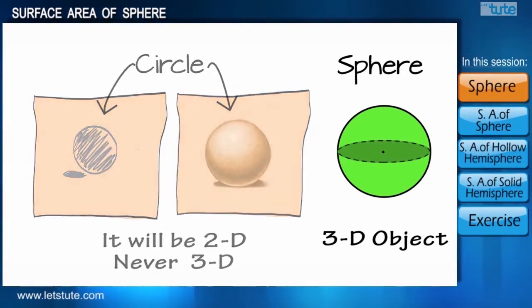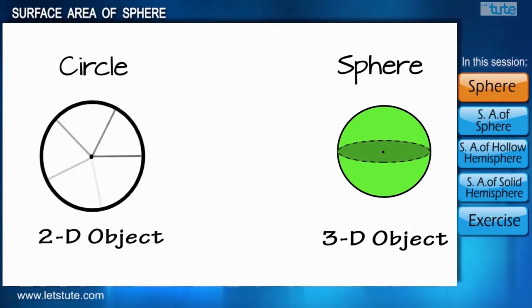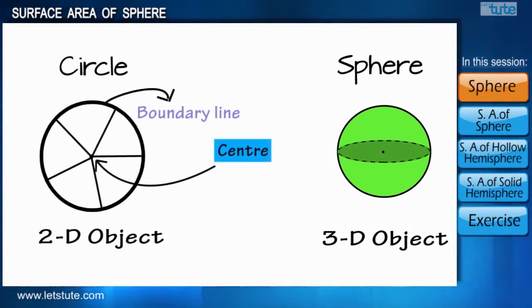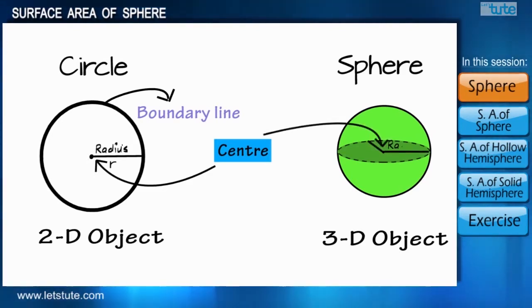Apart from these differences, they do share some similarities. Like in a circle, the distance of each and every point on the boundary from its center is always constant. That distance we know as the radius. Similar would be the case with a sphere.